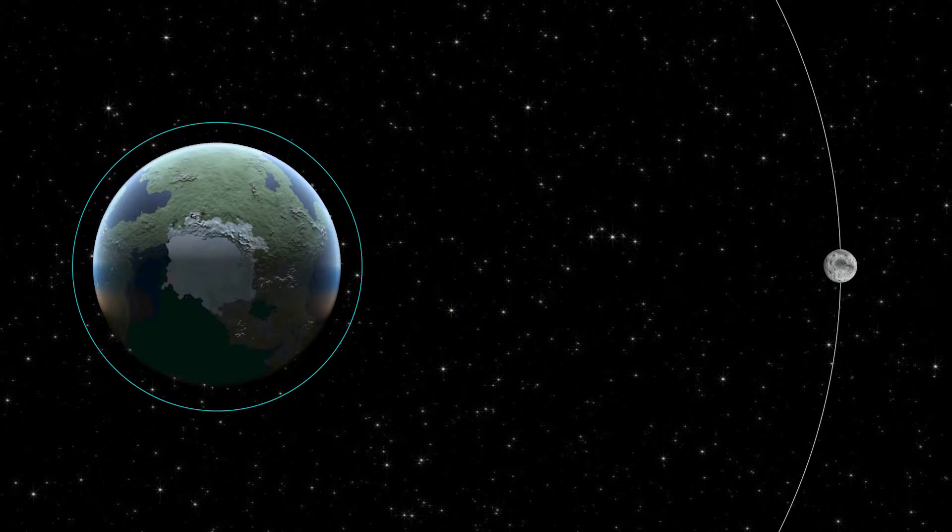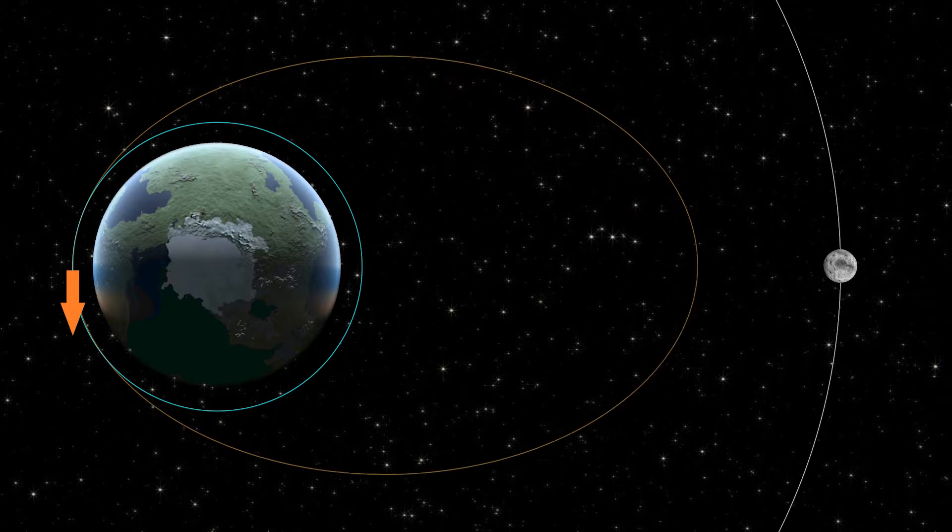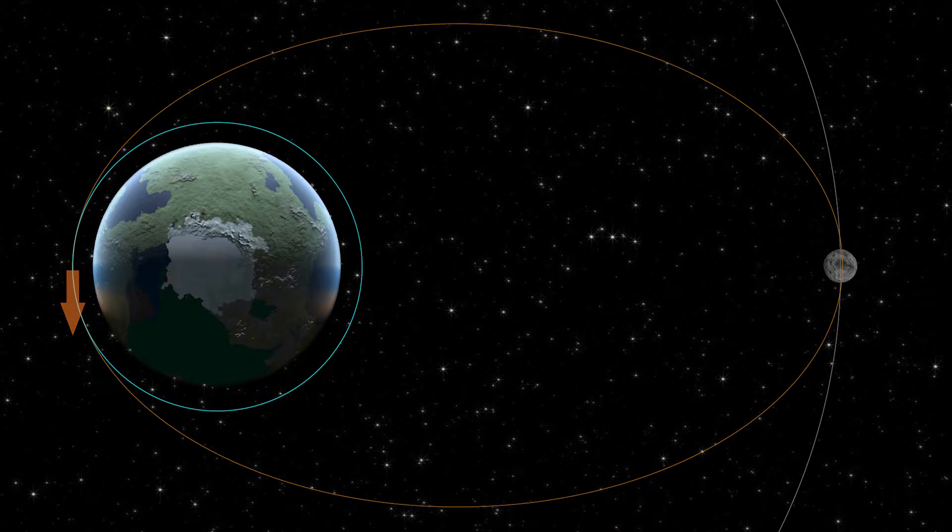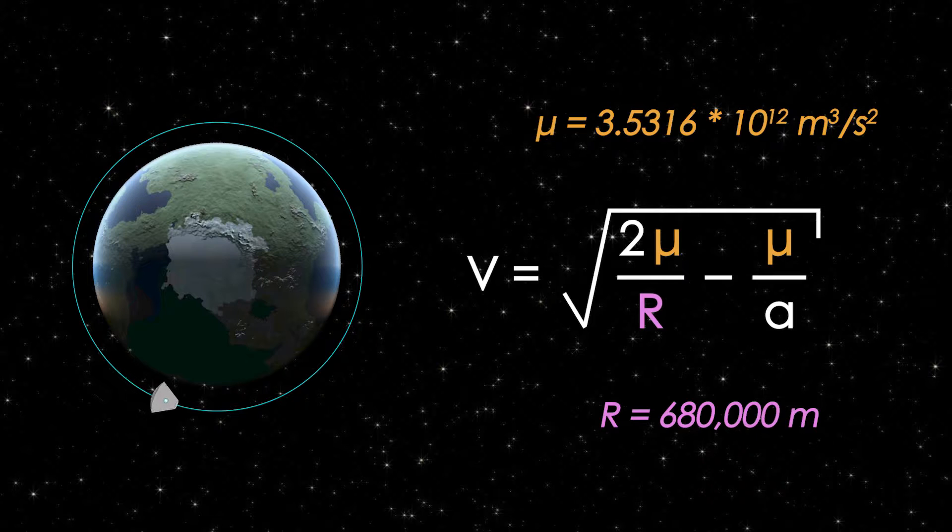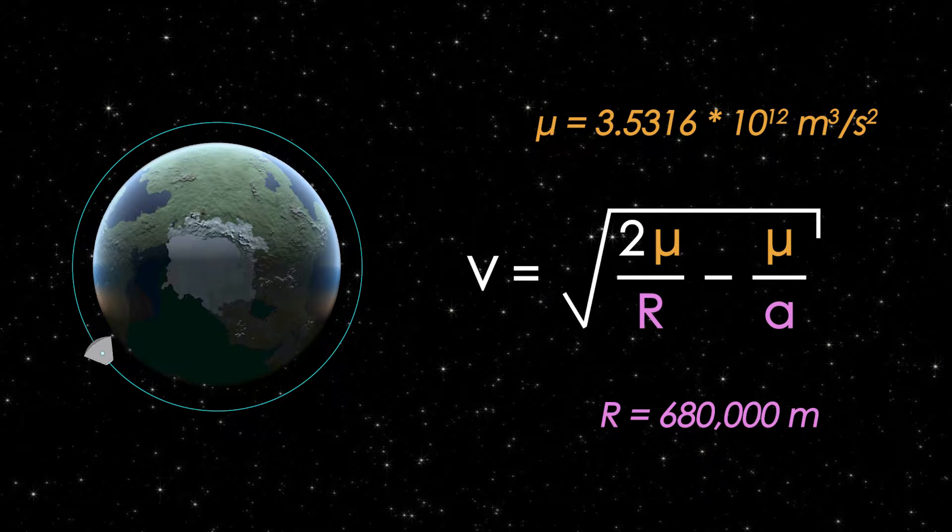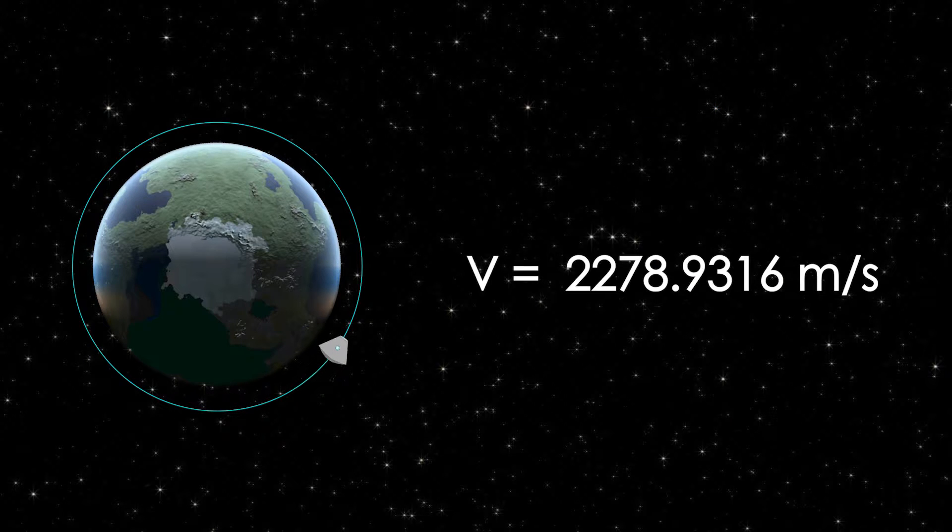So we can finally start calculating our delta-v for our first burn when we're leaving orbit of Kerbin and transferring up to the height of the moon. We'll start by finding our initial speed using this equation. We plug in Kerbin's gravitational parameter, our initial radius of 680 kilometers, and the semi-major axis, which because we're still in the circular orbit is the same as the radius. By the way, you should make sure that you're using all kilometers or all meters for these calculations. I ended up using meters because it's easier to convert the heights than it is to convert the standard gravitational parameters. This tells us that our initial velocity is 2,278.9316 meters per second.